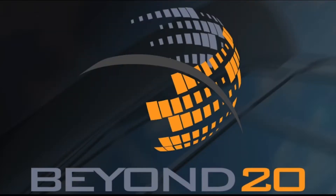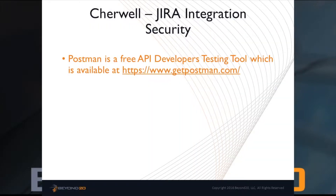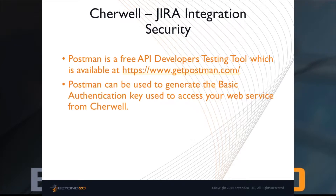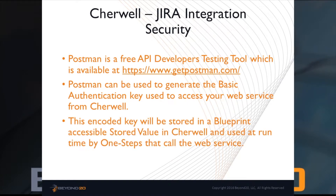There are various tools available on the internet to generate encoded API authorization keys from an API token. This video will show how to use the Postman API development tool to generate the correct API authorization key for a web service, and then store that key in a Blueprint stored value for use by OneSteps that call the web service in ShareWell.